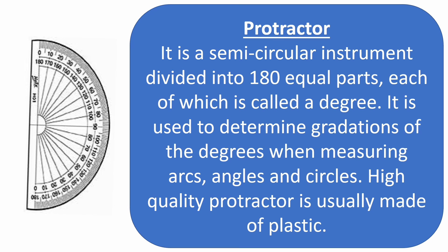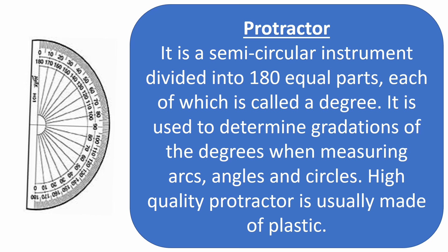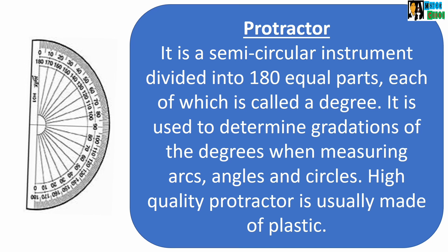Protractor: it is a semi-circular instrument divided into 180 equal parts, each of which is called a degree. It is used to determine the graduation of degrees when measuring arcs, angles, and circles. High-quality protractors are usually made of plastic.